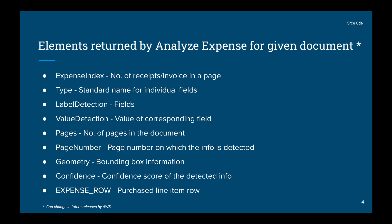Finally, we have the expense row, which is the purchase line item row or product information. These are all the elements returned as part of the JSON response by the Analyze Expense API. So now we have a fair idea of what it is able to detect and what we will get as part of the response.